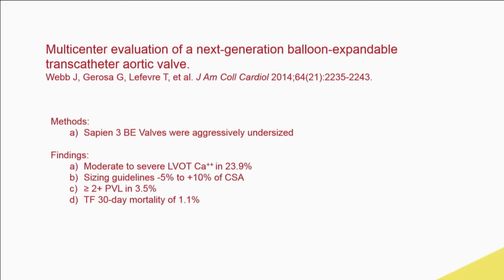Patients with a mitral prosthesis can have a very deformed annulus that prevents adequate sealing. In those cases, it's not bad to leave them with mild-to-moderate paravalvular leak, or to plug rather than do something that will harm the patient. As for valve choice, until the Pro came out, we were using valves with external skirts — Lotus is a good option if available, or Sapien 3 — though how well the Pro's external skirt works remains to be seen.